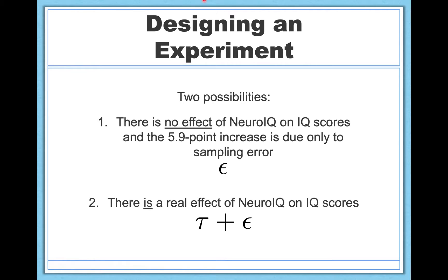It could be the case, for example, that NeuroIQ actually improves people's IQ points by, let's say, three points, but we observed a 5.9-point difference. So there's still some sampling error there. We're still off a little bit, but we're nonetheless picking up on a real effect, so tau plus epsilon.